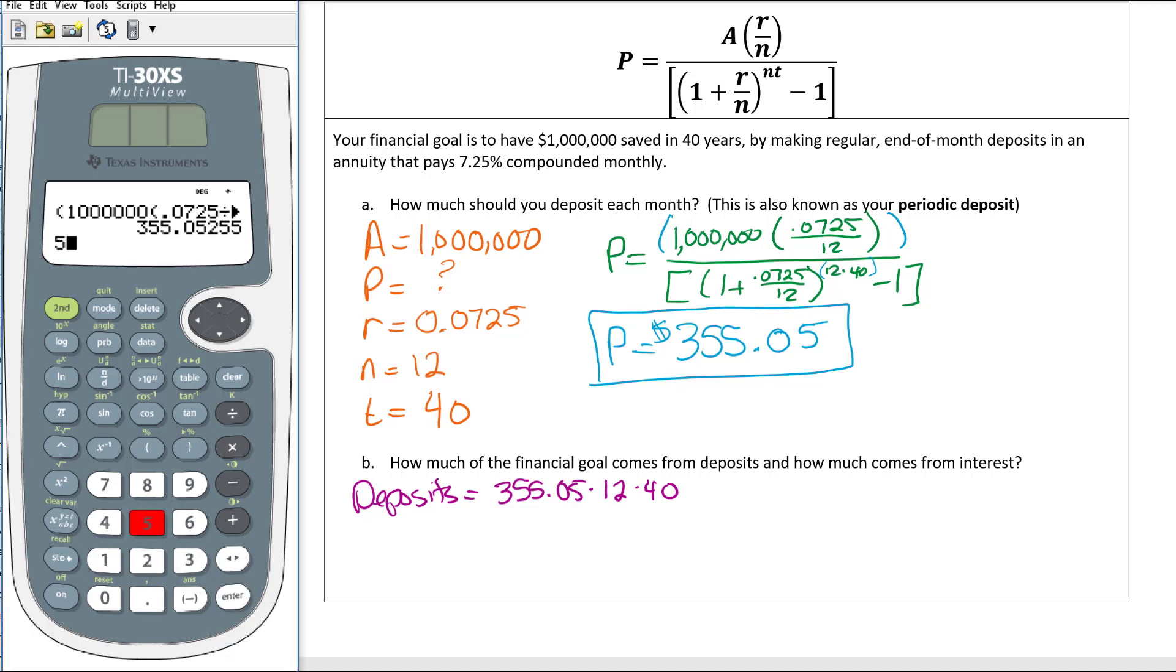I'm going to take, because I had to truncate this, don't use the answer that's already there. You have to use the $355.05 times 12 times 40, and that turns out to be $170,424. So that's how much comes from deposits.